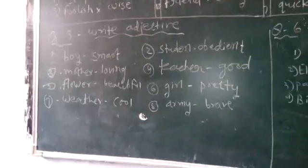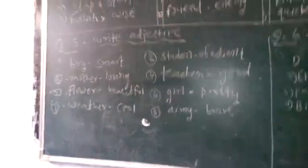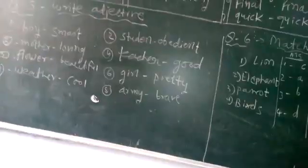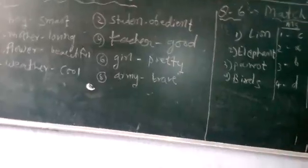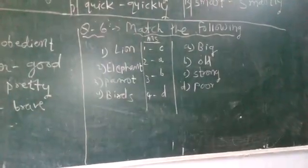Question number 5, write objective: boy is smart, mother is loving, flower is beautiful, weather is cool, student is obedient, teacher is good, girl is pretty, army is brave.